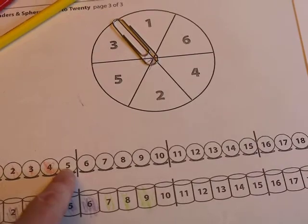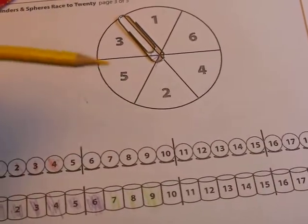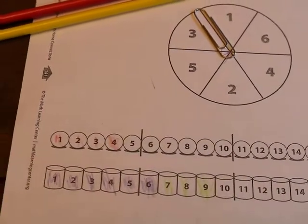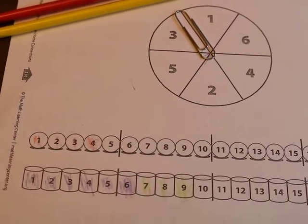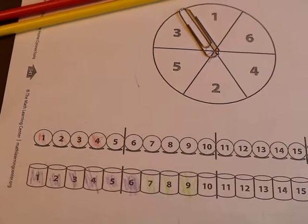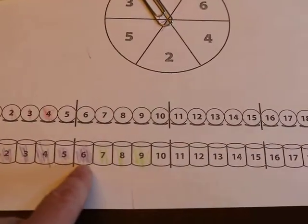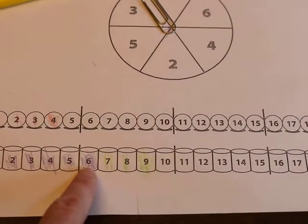So when this other person spins again they would use their yellow. The colors don't matter as long as you each have two colors and you alternate them, that way you can see how you're adding them together. Six and three more is nine.